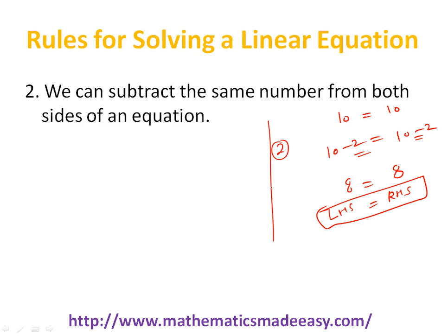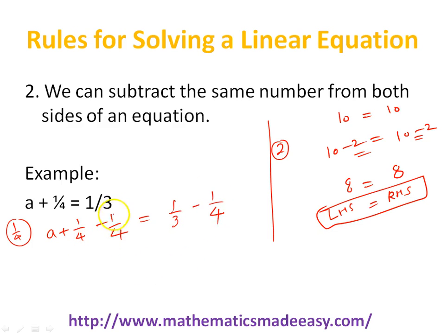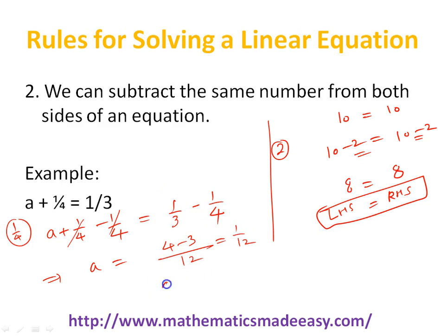So how does this rule help to solve a problem? Suppose I have the equation a plus 1 by 4 equal to 1 by 3. If I subtract 1 by 4 from both sides — a plus 1 by 4 minus 1 by 4 on the left, and minus 1 by 4 on the right — then the minus 1 by 4 and plus 1 by 4 become 0. So it becomes a equal to 1 by 3 minus 1 by 4. The LCM of 3 and 4 is 12, so this becomes 4 by 12 minus 3 by 12 equal to 1 by 12. So a equals 1 by 12.